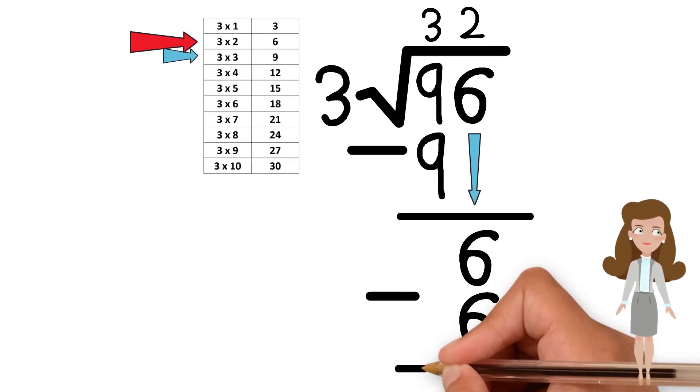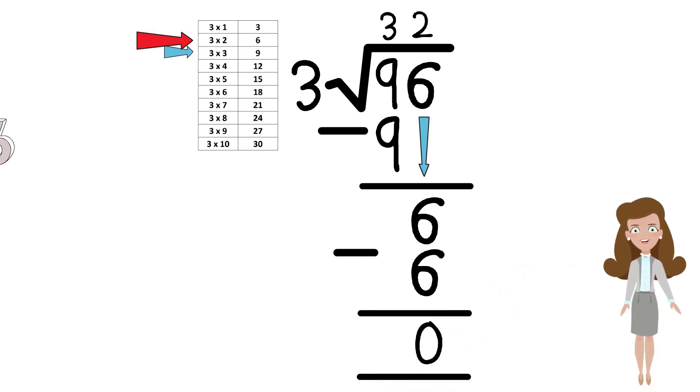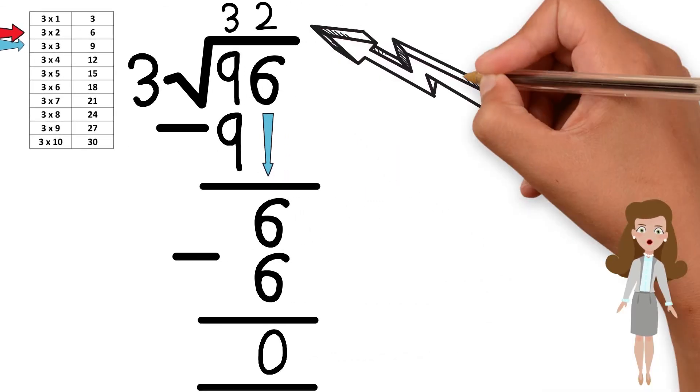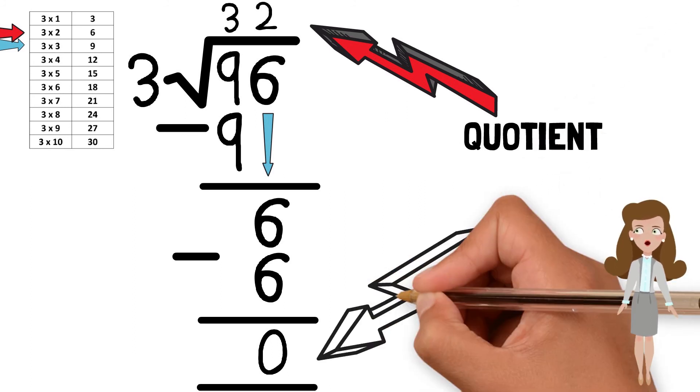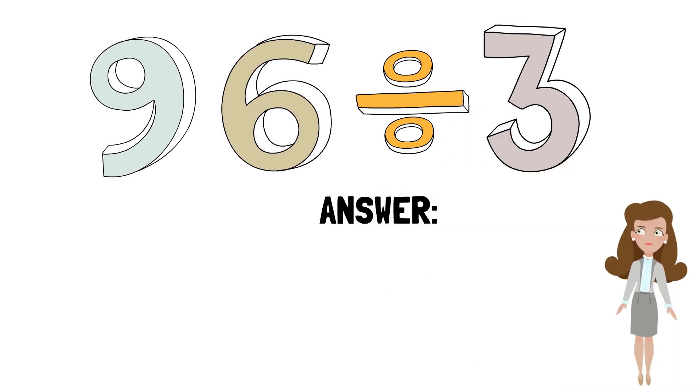Since we don't have any more digits left, that is the final answer. 32 is the quotient and 0 is the remainder. We can write the answer like this.